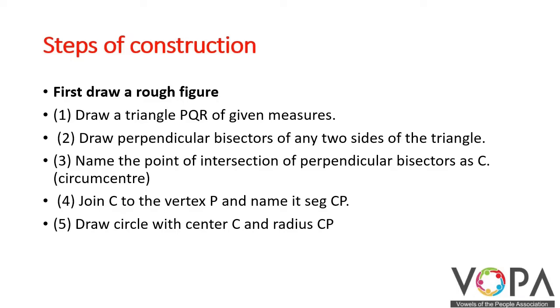Name the point of intersection of perpendicular bisectors as C. Join C to the vertex P and name the segment CP. Draw a circle with center C and radius CP.